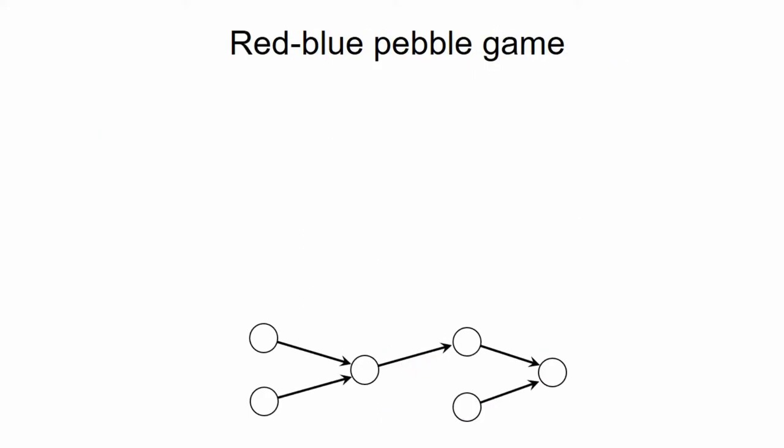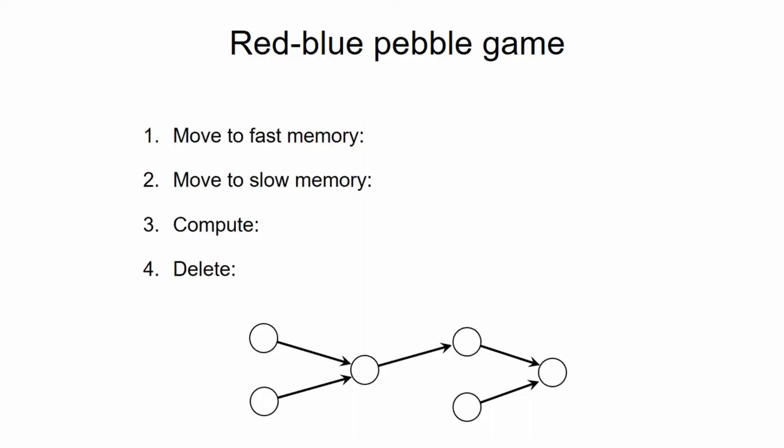So given a computational DAG, the goal of the Red Blue Pebble Game is to place a pebble of any color on the sink nodes of this DAG, and we can achieve this by a sequence of the following steps. First of all, we can always replace a blue pebble by a red pebble, that is, simply move a value to cache. So, for example, if we have these pebbles on the DAG currently, we can just take this blue pebble and replace it by a red one.